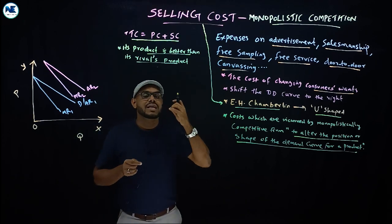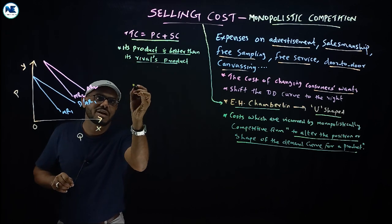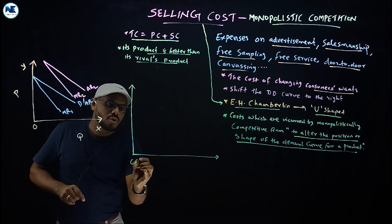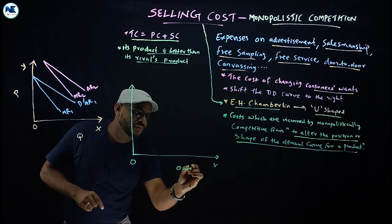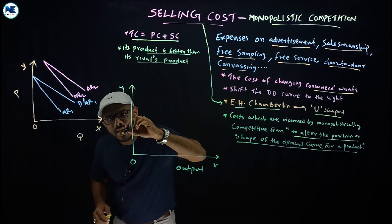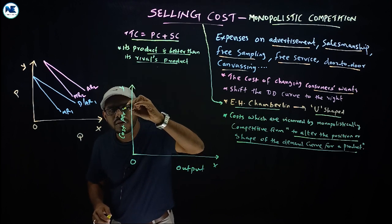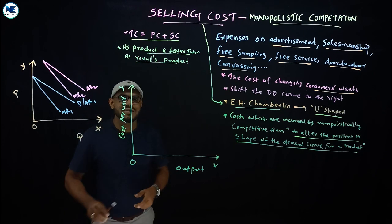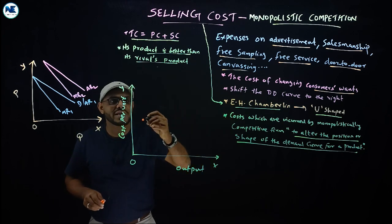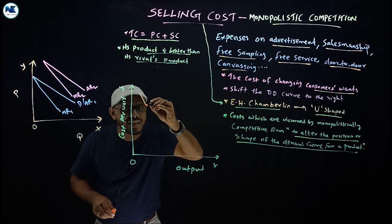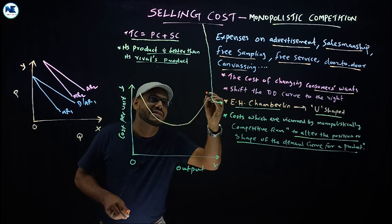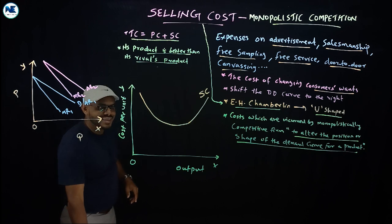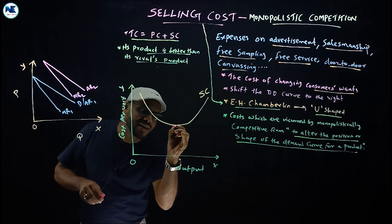How can we represent the selling cost through a simple figure? Please listen very carefully. We can draw it very easily. On the OX axis we have output. On the OY axis we can take cost per unit—that is, average cost or average selling cost. What is the shape of selling cost? It's U-shaped, as we already mentioned. This is selling cost. We can mark the minimum point. This is the minimum point of the selling cost.